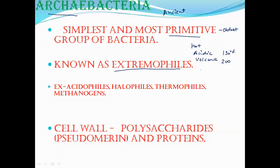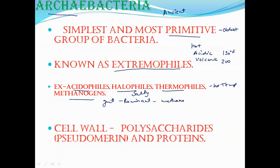They are found in extreme conditions and can survive there, that's why they are known as extremophiles. Here are some examples: acidophiles live in acidic environments, halophiles in salty areas, thermophiles in hot temperatures, and methanogens are bacteria found in the guts of ruminant animals. They perform the process of methanogenesis — they make methane from dung.